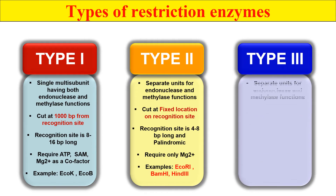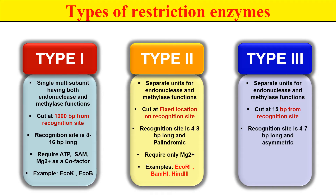The next is Type III. They also have separate units for the endonuclease and methylase activity. They cut 15 base pairs away from the recognition site — they recognize their specific restriction site but do not cut within it. Their recognition site is generally 4 to 7 base pairs long. They also require ATP, S-Adenosyl Methionine, and Magnesium ions for their activity. Examples of Type III Restriction Enzymes are EcoP1 and EcoP15.